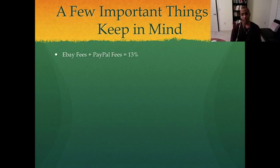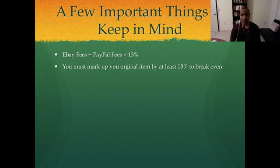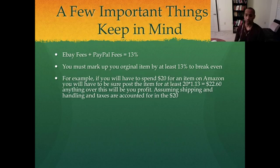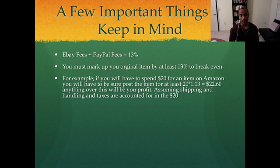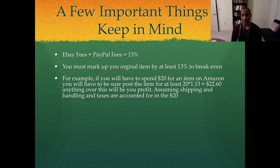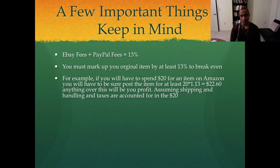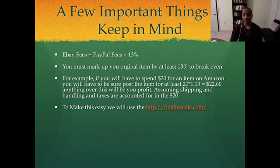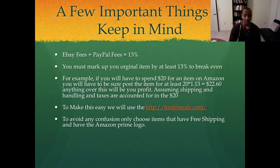First, a few important things to keep in mind. The eBay fees and PayPal fees together make up about 13%, so you must mark up your item price by at least 13% to break even. For example, if something costs $20 including shipping, taxes, and handling on Amazon, you'd need to sell it for at least $22.60 to break even on eBay. But we're going to make this much simpler — we're going to use a website called finalfeecalc.com. I'll show you that right after this PowerPoint.